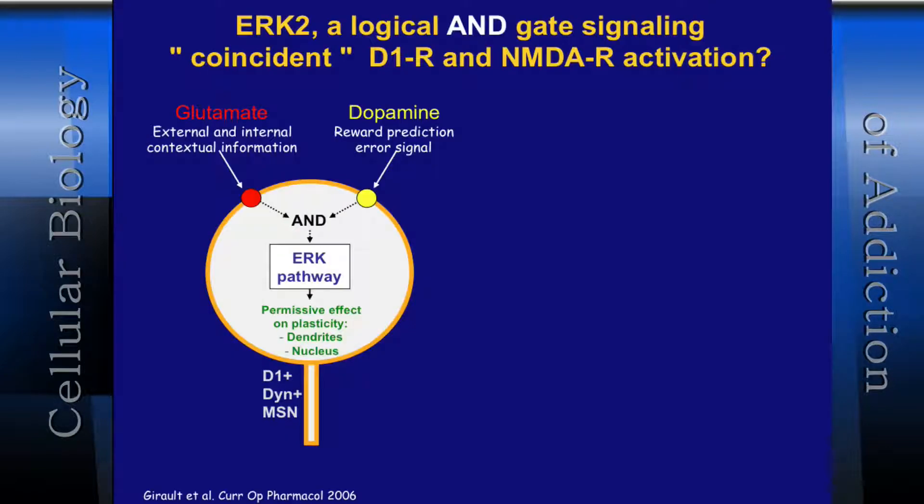At a more general level, Jean-Antoine Girault has posed — based on this data — the idea that there's a coincident interaction, a synergy between D1 receptor activation and NMDA receptor activation, which he calls a logical AND gate. The idea is that you have external/contextual information mediated through glutamate inputs to the medium-spiny neurons. You have dopamine acting as a reward-prediction error signal. If both occur at the same time and place, you synergistically activate the ERK pathway, leading to changes in plasticity and transcriptional events that result in long-term changes in selected neurons.